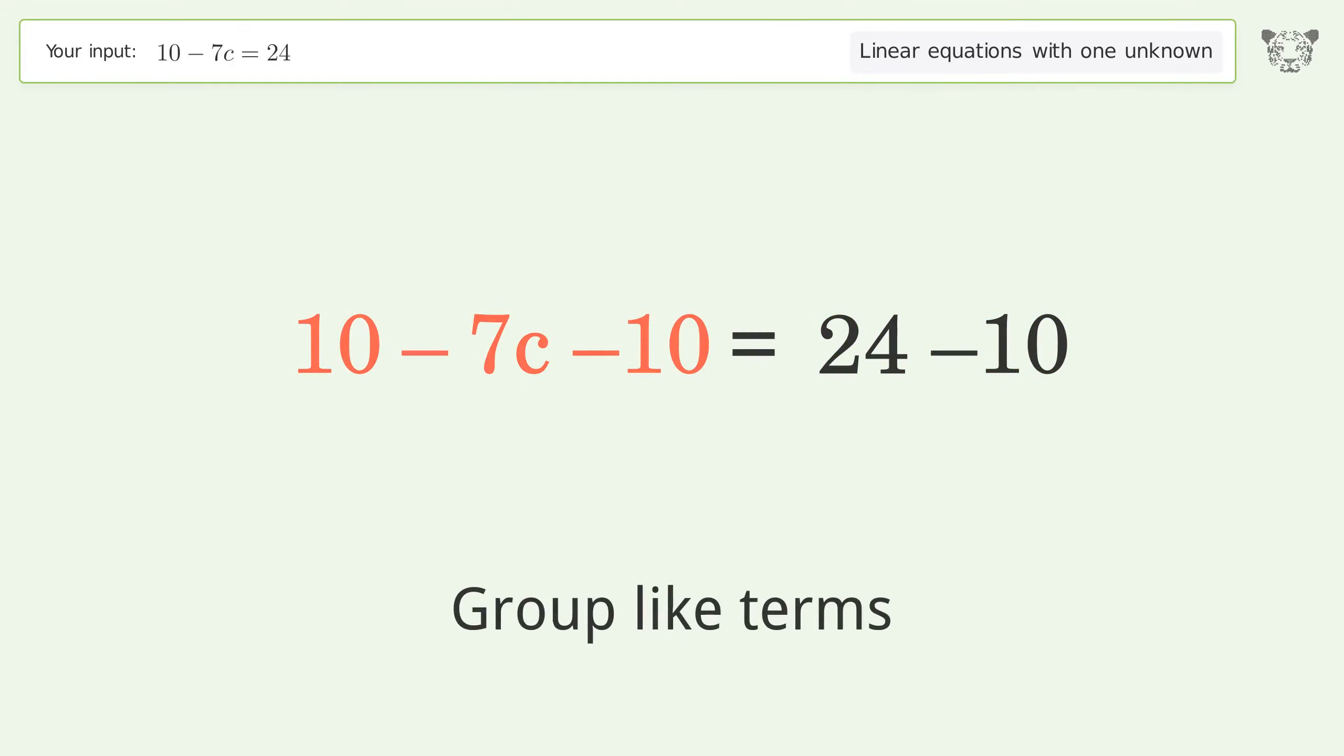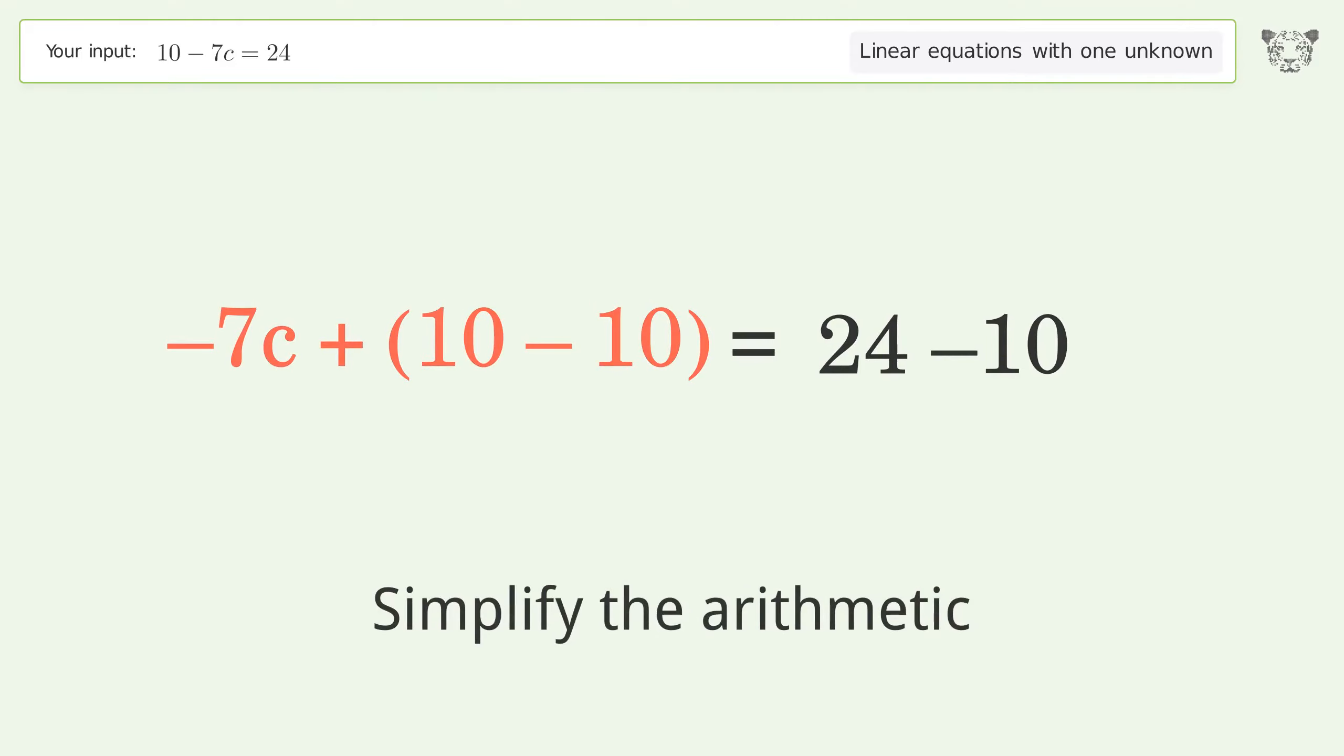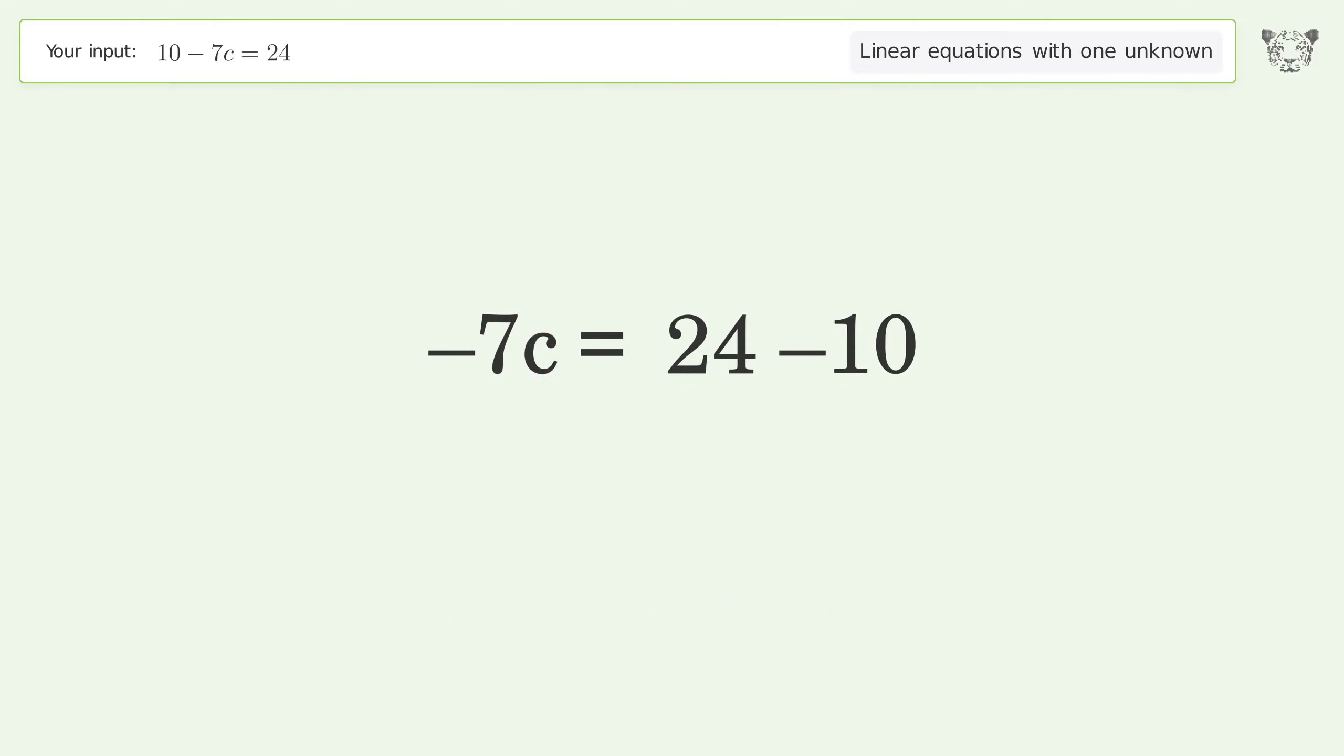Group like terms. Simplify the arithmetic. Isolate the c. Divide both sides by negative 7.